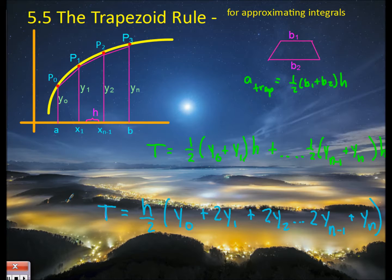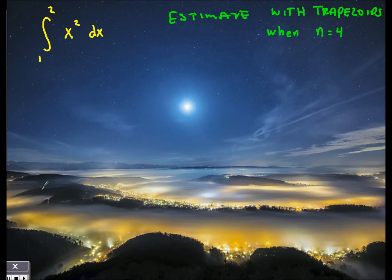You would do this with n sub-intervals of length h equals b minus a divided by n, where b and a are your upper and lower limits of integration. Here's an example problem.